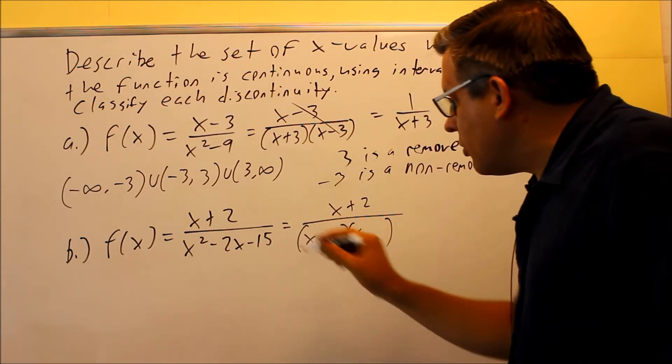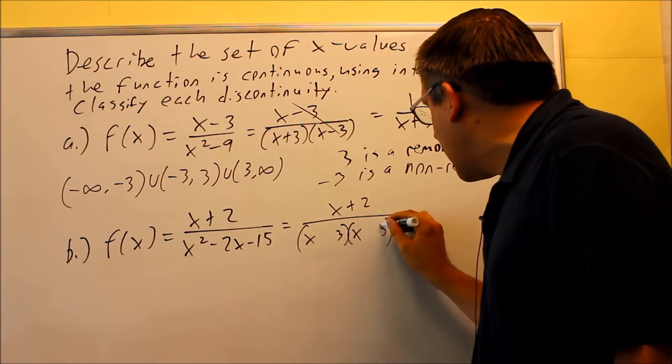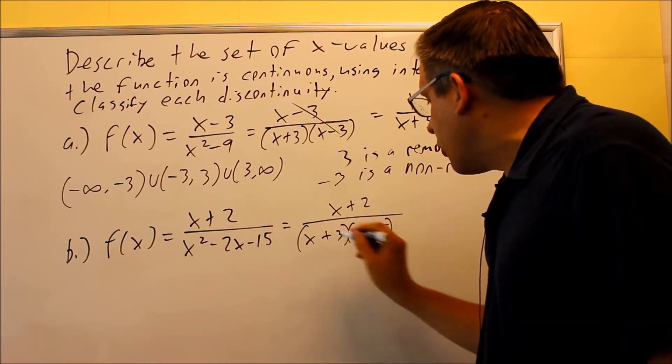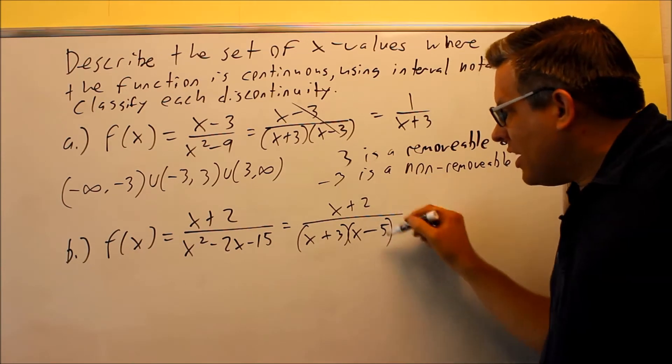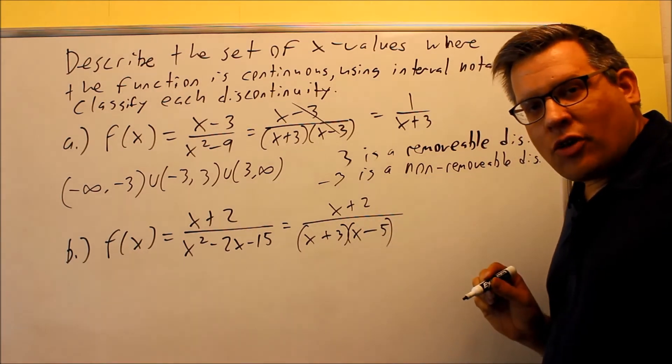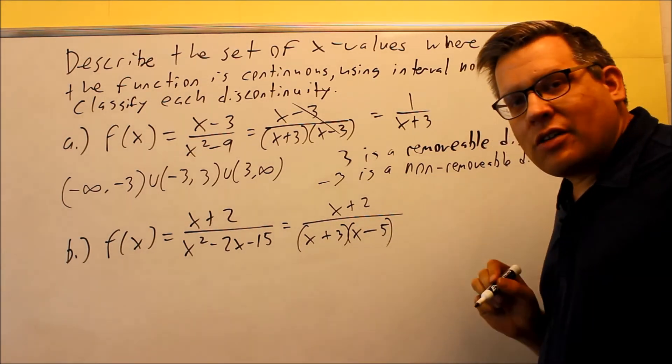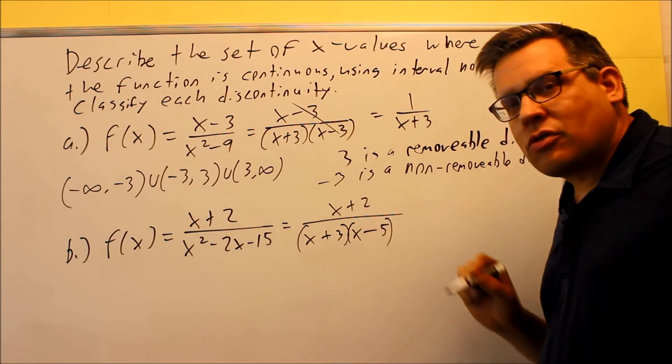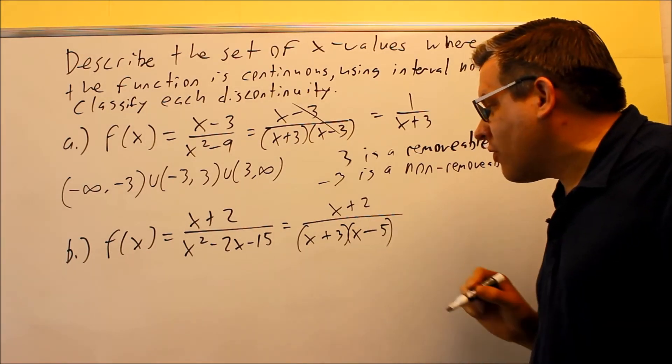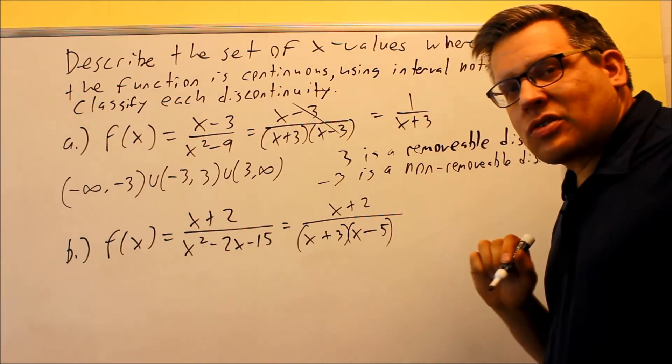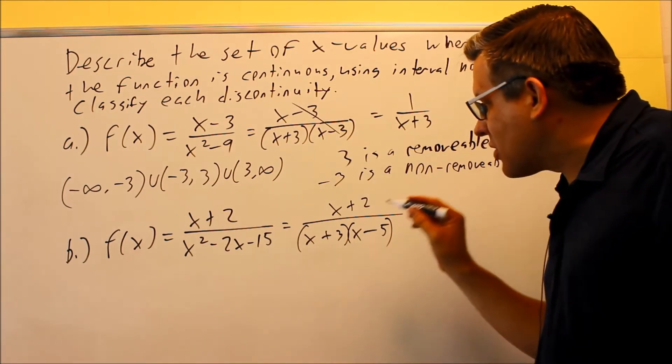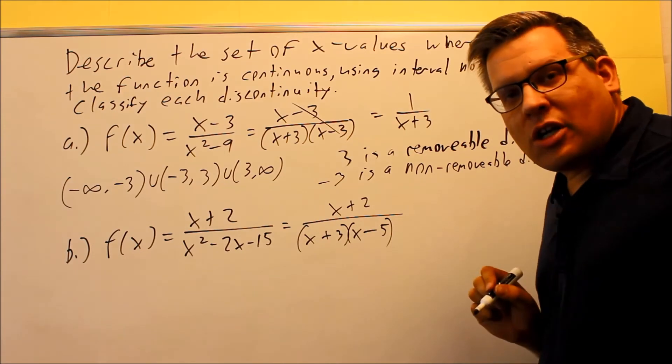Factors of 15 that add up to negative 2, we can use 3 and 5. And we're going to do negative 3 and a positive 5. So when we factor it, we notice that nothing cancels from the top. So we have discontinuities at negative 5 and also at positive 3 and negative 3. So when we write our interval notation,